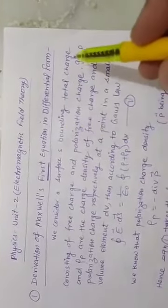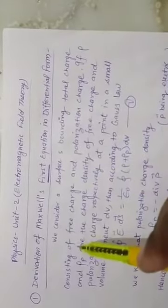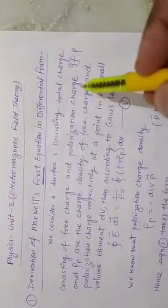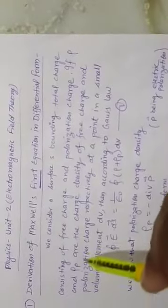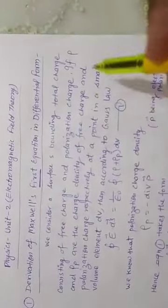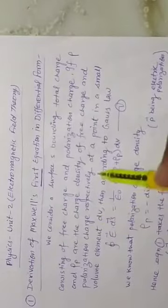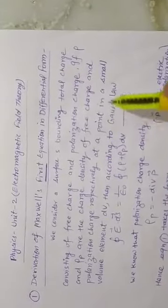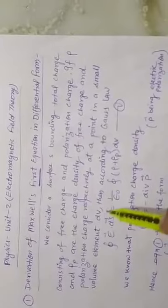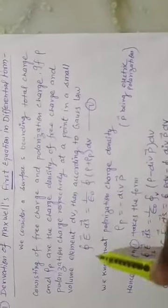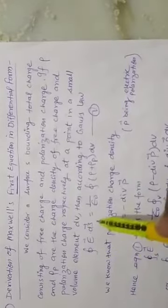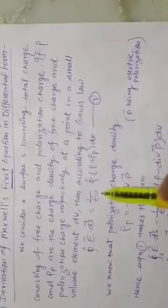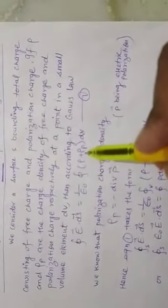We consider a surface S bounding total charge consisting of free charge and polarization charge. If rho and rho_p are the charge density of free charge and polarization charge respectively at a point in a small volume element dv, then according to Gauss's Law: closed surface integral of E·ds equals 1 over epsilon naught times the closed integral of (rho plus rho_p) dv. This is equation number 1.